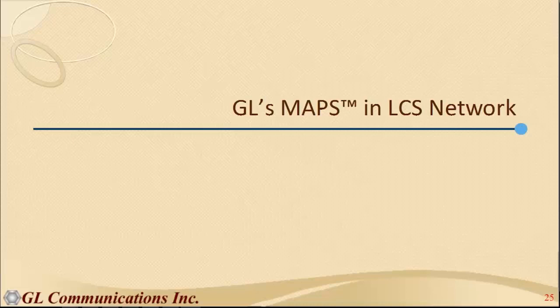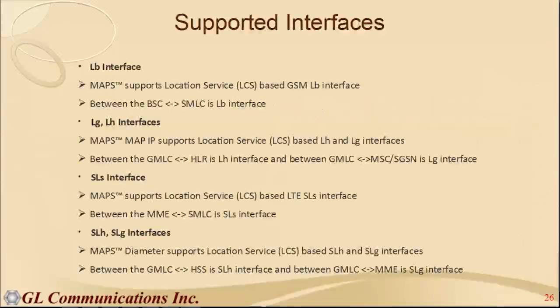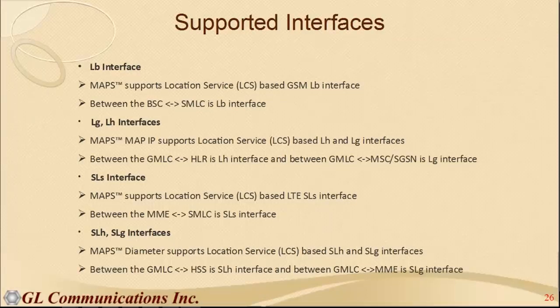Now concentrating on the MAPS LCS products — the interfaces supported on 2G include the Lb interface between BSC and SMLC, and on the network side, Lg and Lh between GMLC/HLR and GMLC/MSC or SGSN respectively. On 4G, the SLs interface between MME and SMLC is supported, along with Diameter-based SLH and SLG interfaces between GMLC/HSS and GMLC/MME.